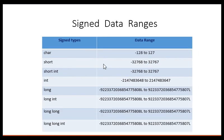And similarly, for signed char, we saw minus 128 to 127. Similarly, for short, it is minus 32K to plus 32K.